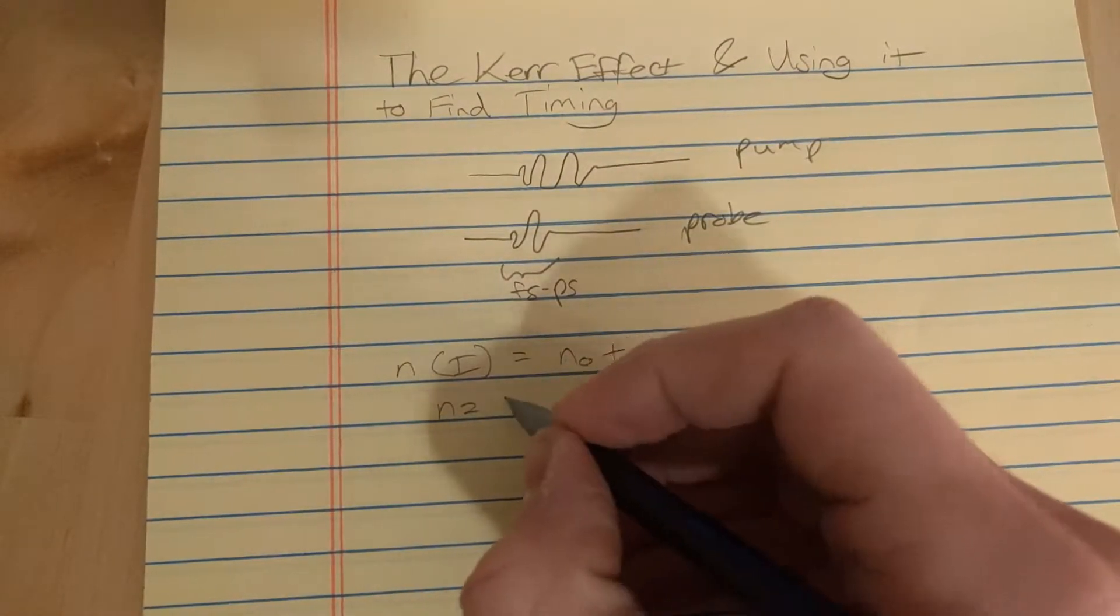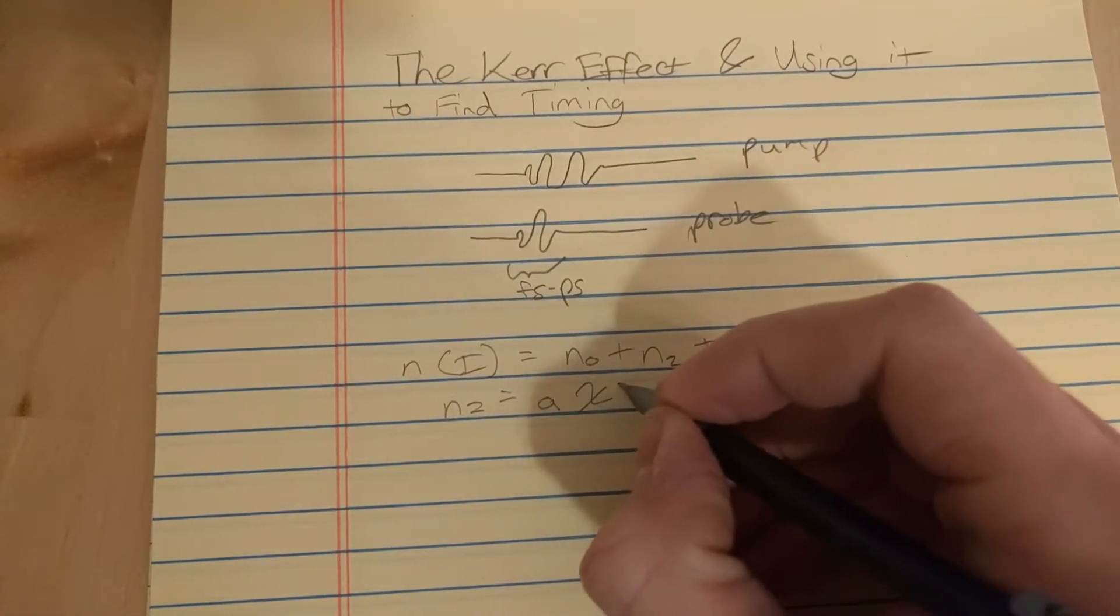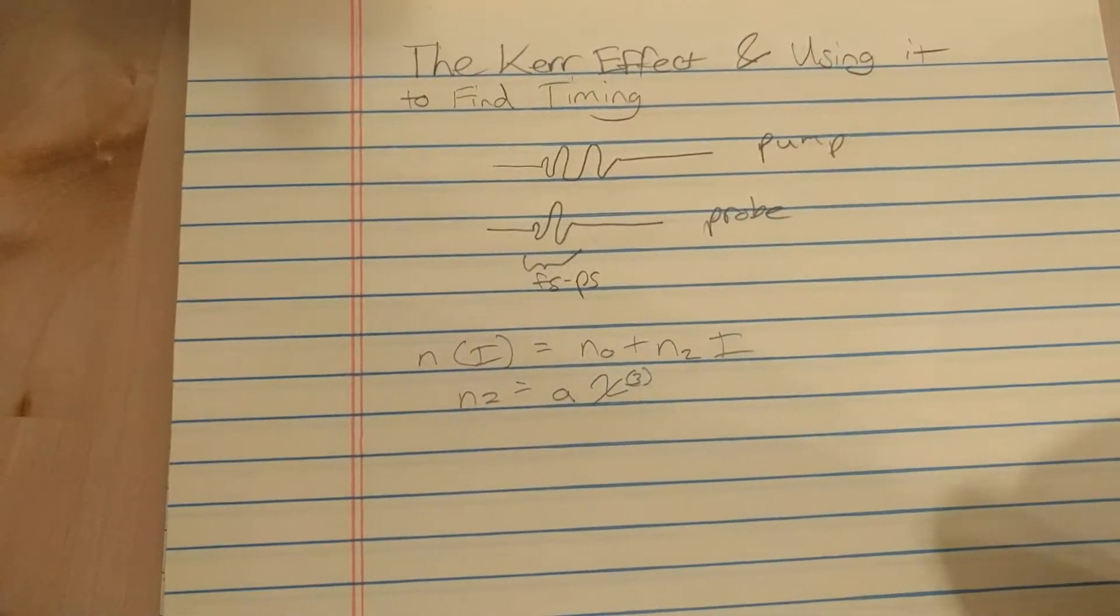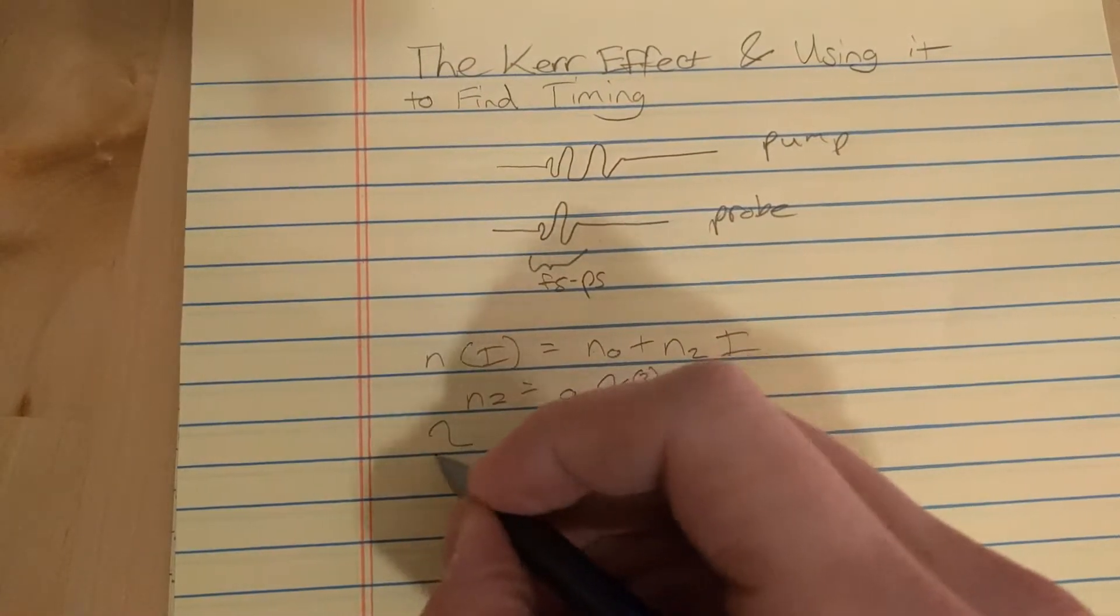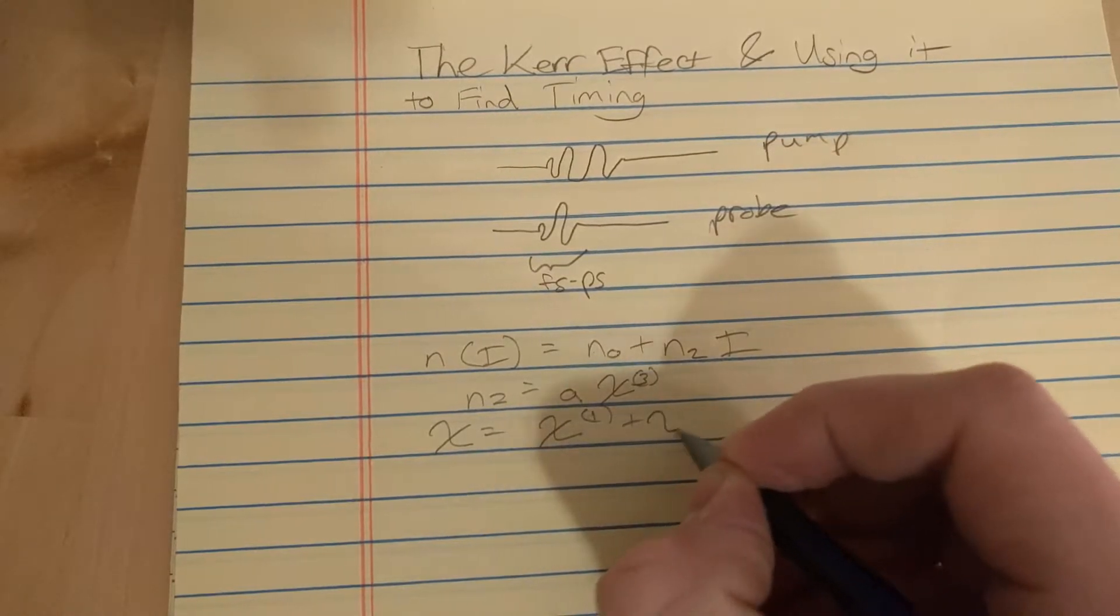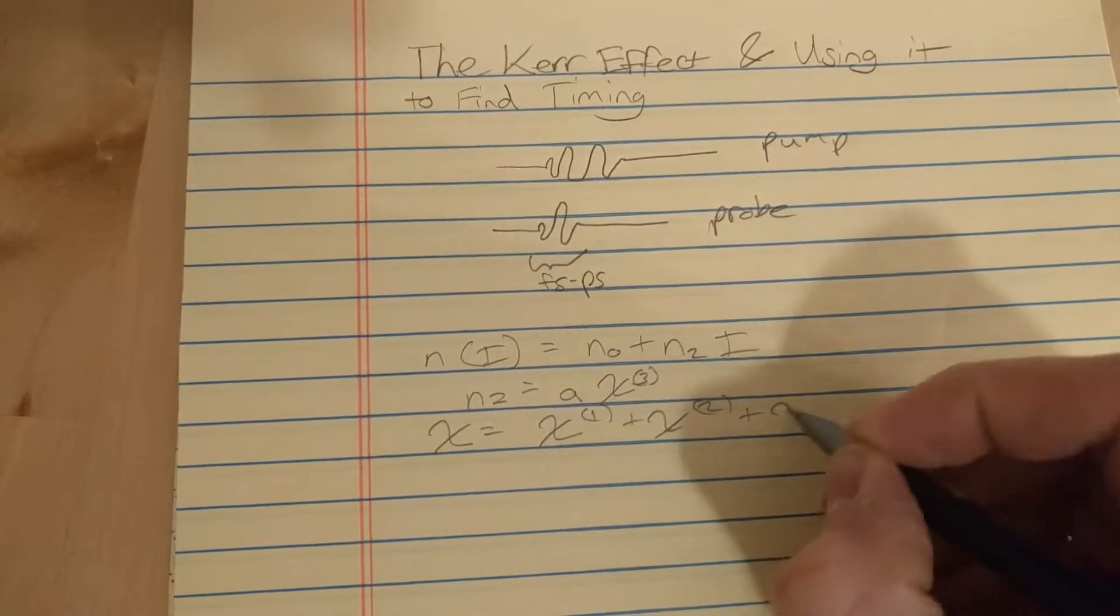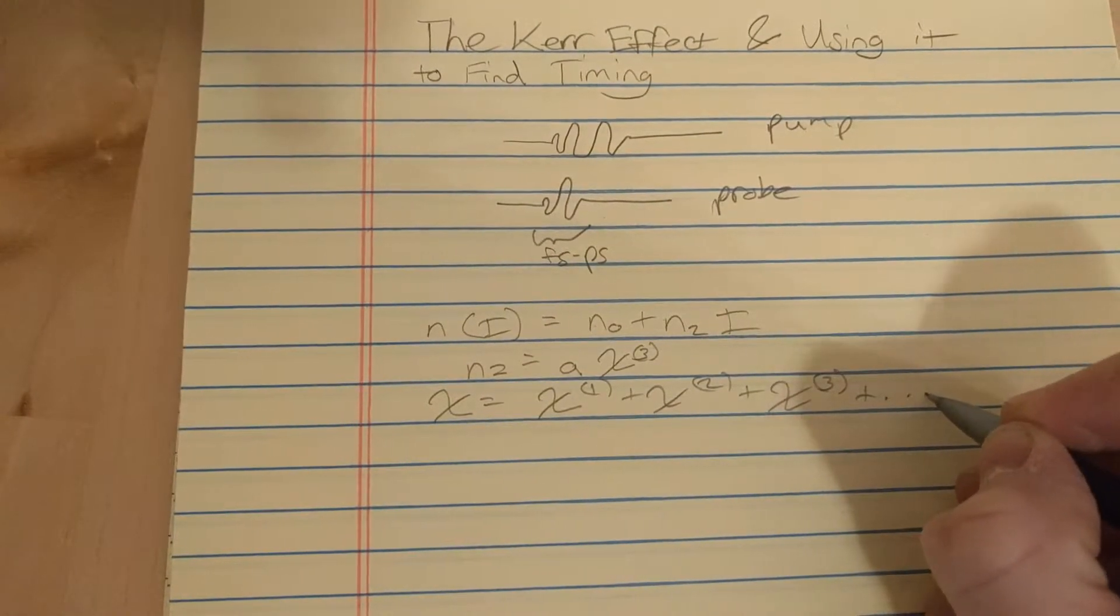N2 is equal to some constant, doesn't matter for these purposes, times chi3, where chi3 is the third-order nonlinear susceptibility. So the susceptibility can be written as a series: chi1, plus chi2, plus chi3, and higher order terms.